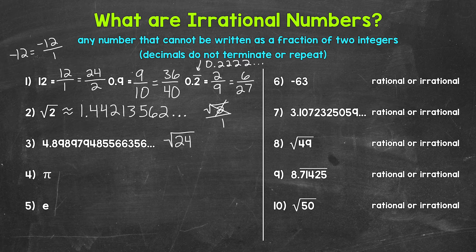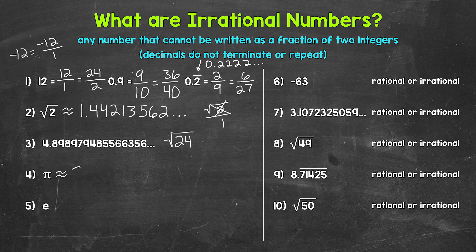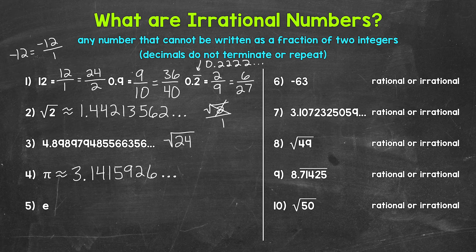For number 4, we have pi, which is a very famous irrational number that we use when working with circles. Pi is the ratio of a circle's circumference to its diameter — circumference divided by the diameter — and pi is the same for every circle. Pi is approximately 3.1415926 and this continues on forever without repeating. We cannot write pi as a fraction of two integers. Pi is irrational. It's very common to use 3.14 for pi, but that's just an approximation.